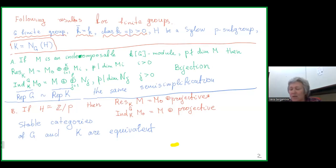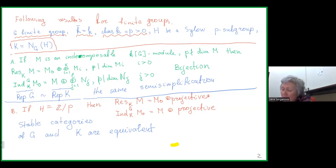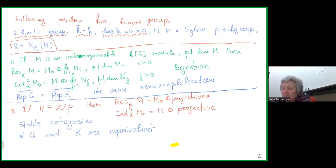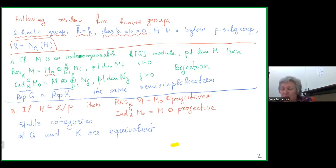There are two theorems which I call A and B. Theorem A is a particular case of what is called Green correspondence. Suppose M is an indecomposable representation of G over K and suppose the dimension of M is not divisible by p. Then I can restrict it to K, and it decomposes into a direct sum of indecomposable representations where exactly one has the same property — p does not divide its dimension — and all other indecomposable summands have dimension divisible by p.